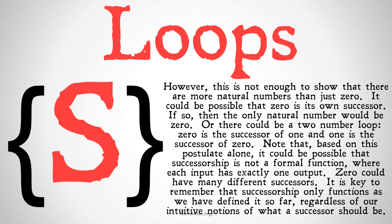This is similar to axioms about sets showing that the union or power set of a set is also a set. You might think this is enough to show that the natural numbers are infinite, but it's not quite enough, because depending on how we define successorship, it could be possible that zero is its own successor. We haven't explicitly defined what successorship means yet. If so, the only natural number would be zero, or we could have a two-number loop where zero is the successor of one and one is the successor of zero. Based on this postulate alone, successorship might not be a formal function where each input has exactly one output.